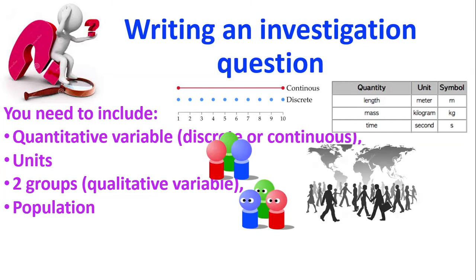Then we talk about our population. So who is that population we're interested in? Are we interested in just teenagers in New Zealand? Are we just interested in teenagers at OSC? Who are the group of people that we're interested in?